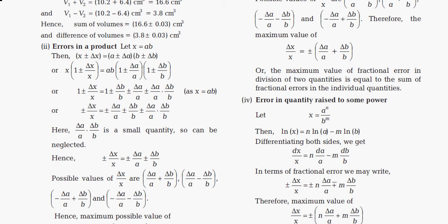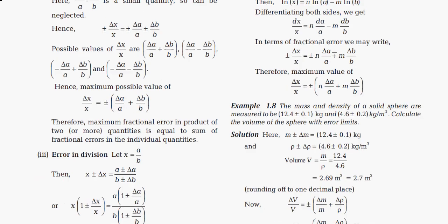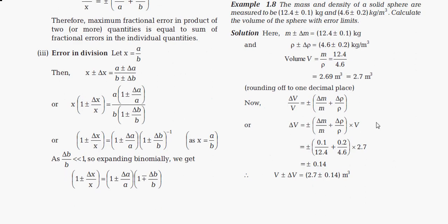The fourth case is error in a quantity raised to a power. If x = a^n × b^m, by taking logarithm of both sides, we get: Δx/x = n(Δa/a) + m(Δb/b). The key difference from simple multiplication is that the power becomes a multiplying factor on each relative error term. Let's see a problem: the mass and density of a solid sphere are measured as 12.4 ± 0.1 g and 4.6 ± 0.2 g/cm³. Calculate the volume.